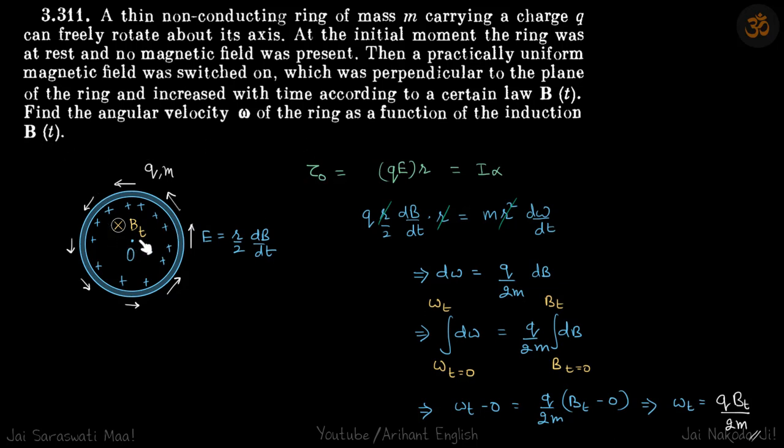When the charge q is distributed on the periphery, we know that due to the induced electric field, every charged particle on this ring will be forced in the tangential direction. That will create a net torque on the whole ring.